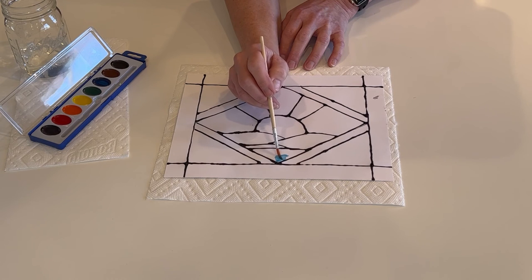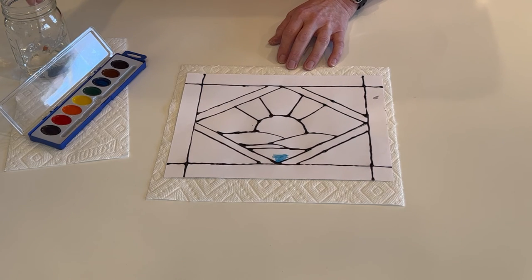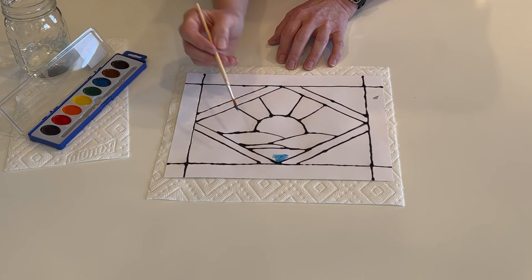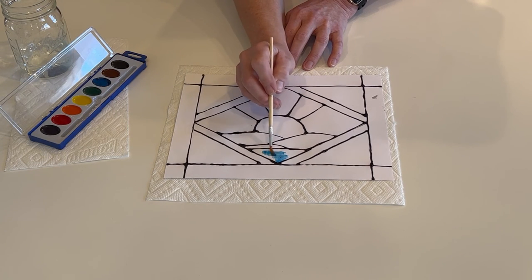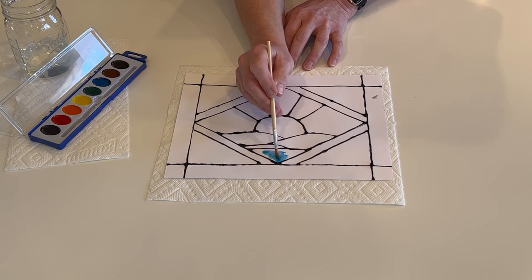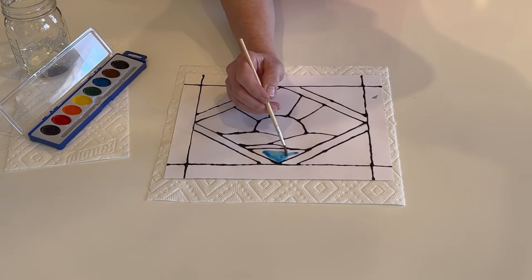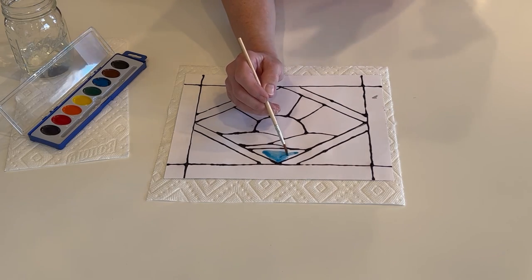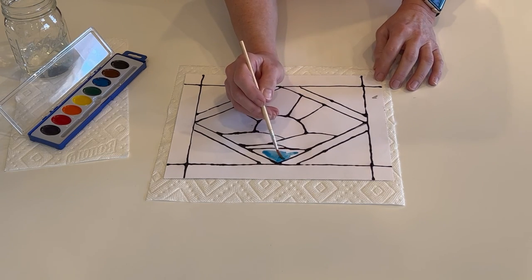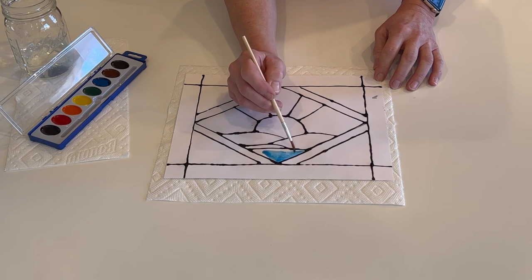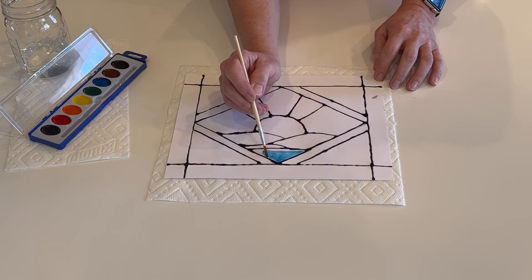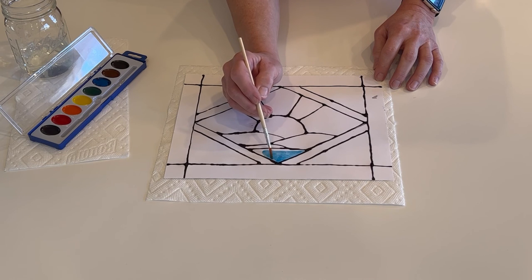Remember if it's not completely dry when you touch it you're going to get black on your brush and then you're going to drag it all through in your picture. So it's worth the extra wait to make sure you're patient and it's completely dry first. And the trick for watercolors is to kind of let it go ahead and it'll fill in the area.